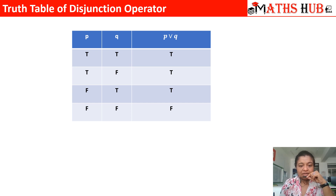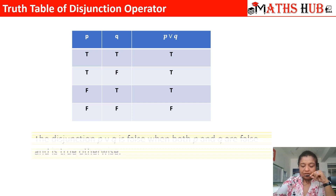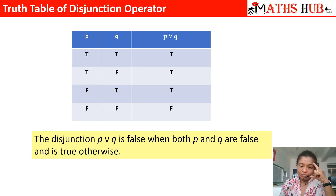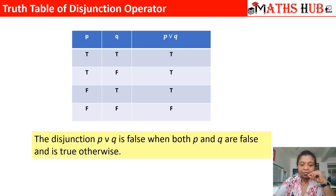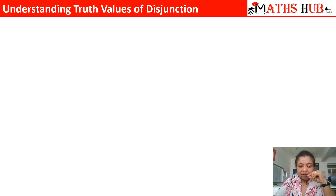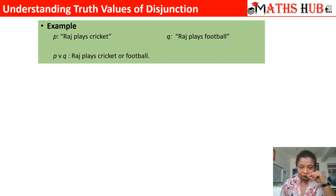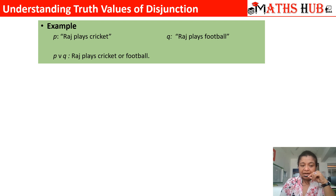This is totally opposite of the conjunction operator. P or Q, the disjunction operator, is only false when both are false. Rest of the time it is always going to be a true statement. Let us understand the truth table with this example: our propositions are 'Raj plays cricket' and 'Raj plays football', and our argument is that Raj plays cricket or football — any one of them.